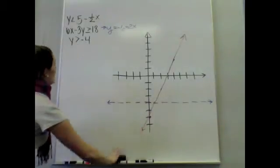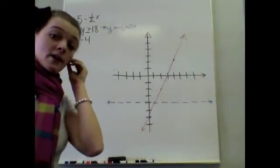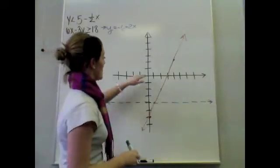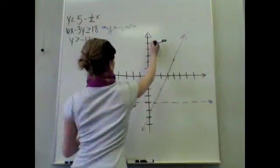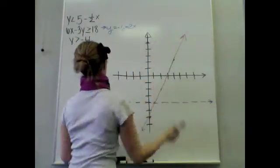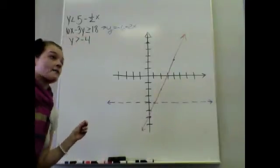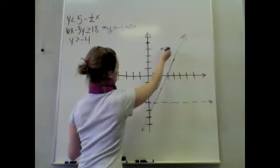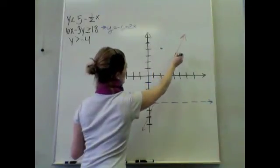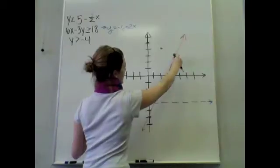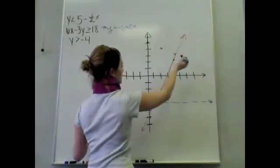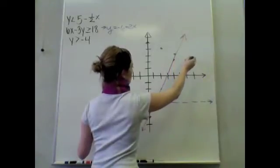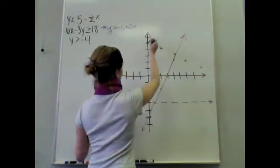Y is less than 5 minus one-half x. This one is not 'or equal to,' so I'm also going to have to create a dashed line. My y-intercept is positive 5: 1, 2, 3, 4, and 5. This one has a slope of negative one-half, so I'm going to go down 1 over 2, down 1 over 2, and so forth.